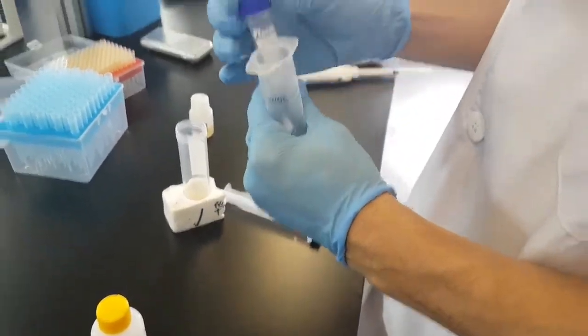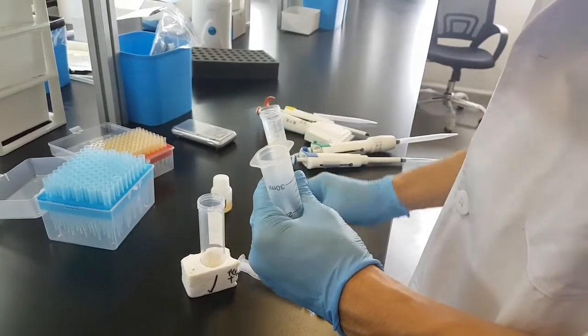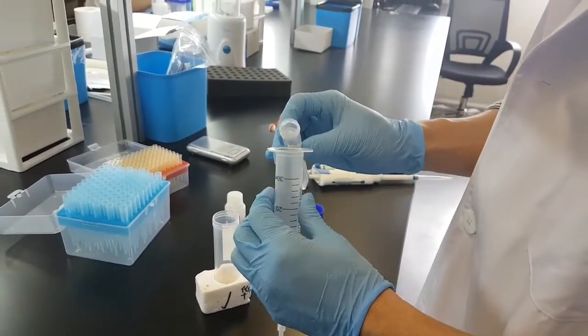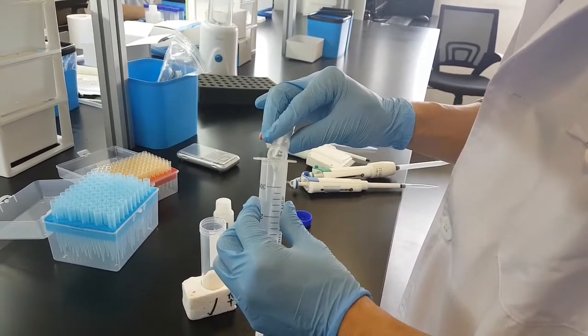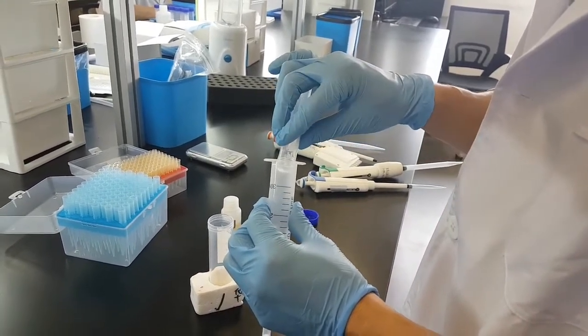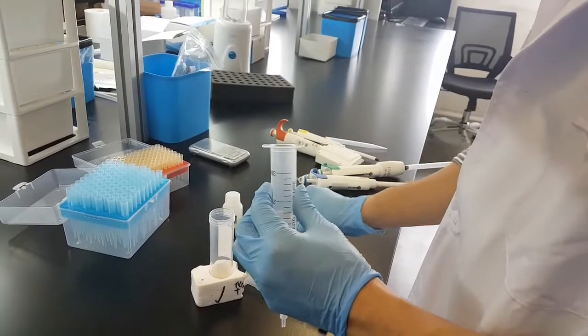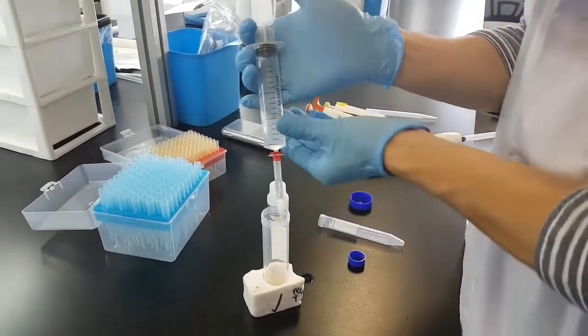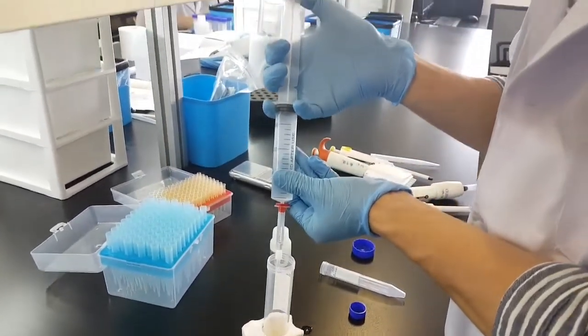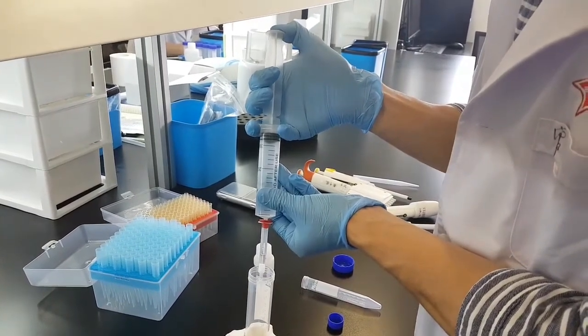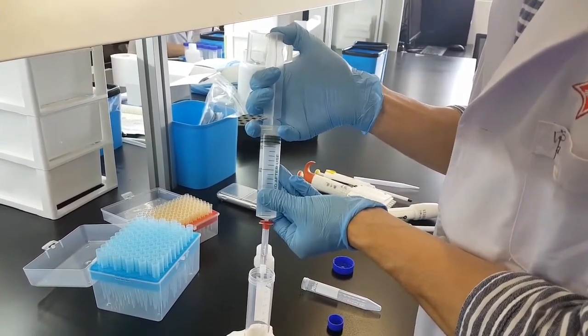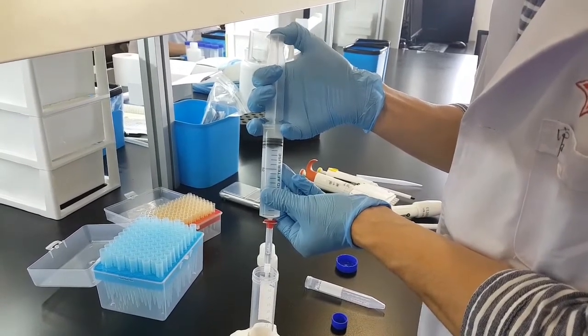Make sure it is tight and pour the whole liquid we have in the 15 milliliters centrifuge tube. So now the whole liquid, we will carefully take down and press.